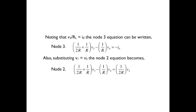Looking at node 2 equation, we haven't used the fact yet that V sub 1 is equal to V sub S. Let's make that substitution in the node 2 equation. And here we have two equations, but of course we have three node voltages, V sub 2, V sub 3, and V sub 4.